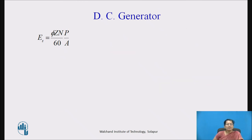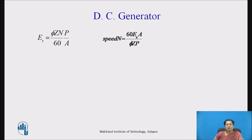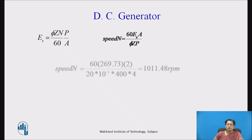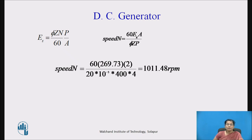The generated EMF is given as φZN by 60 into P by A. From this we can write down the speed N equal to 60 into EG into A divided by φ·Z·P. After putting the values in this formula, we will get 60 into 269.73 into 2, divided by 20 into 10⁻³ into 400 into 4, equal to 1011.48 RPM. That is the speed of the DC generator.